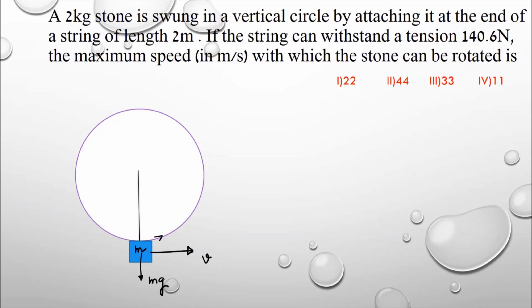The question tells us the mass is 2 kg. The radius of the circle is equal to the length of the string, which is 2 meters. For convenience, let us take the radius as r. As the body moves upward, the height from the ground keeps increasing. As a result, its potential energy increases and its velocity decreases.